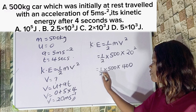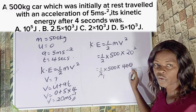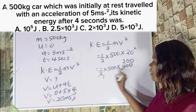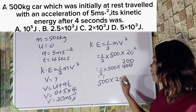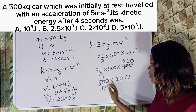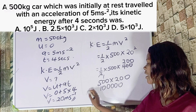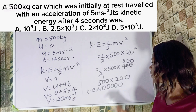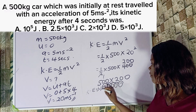Now something can cancel — the 2 cancels into 400 to give us 200. So by the calculation we have 500 multiplied by 200, which gives us 100,000. This is my kinetic energy. If I want to write it in standard form: counting the digits — 1, 2, 3, 4, 5 — this is equivalent to 1 times 10 to the power 5.